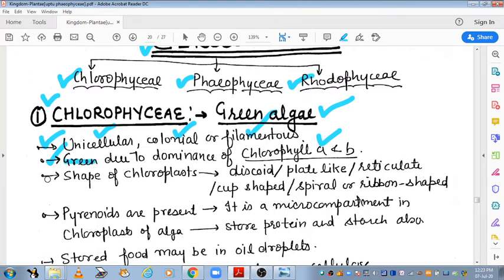What is the shape of chloroplast in this class? Chloroplast is discoid shape, some plate-like or reticulate, they are a network. Cup shape are also present in this class, and spiral shape are also present.